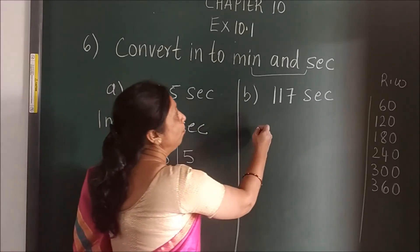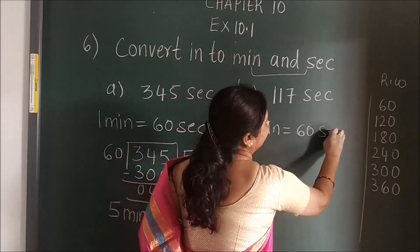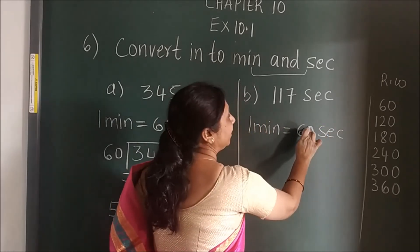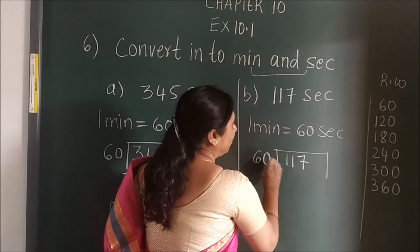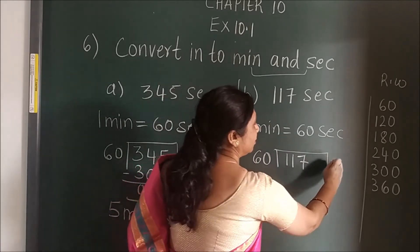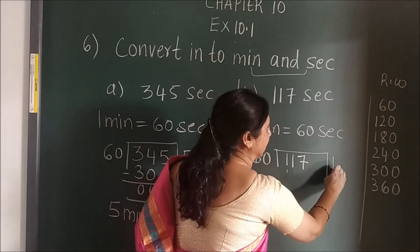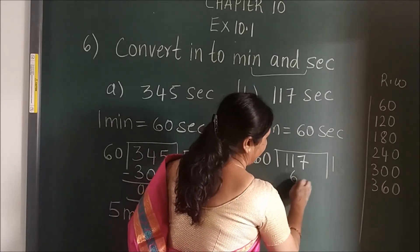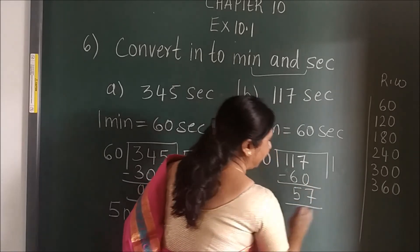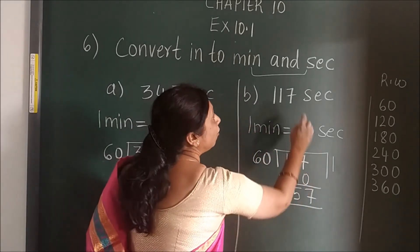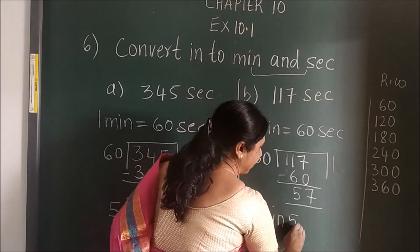Same here — again write the relation: 1 minute is equal to 60 seconds. After writing the relation, divide the given number by 60. Table of 60: 2 times 60 is 120, which is more, so go to 1 times 60 is 60. Remainder is 57. So your final answer will be 1 minute 57 seconds.